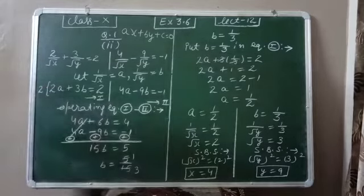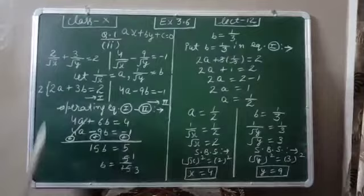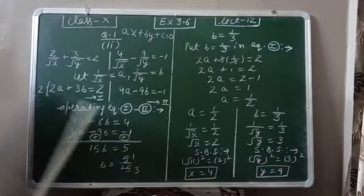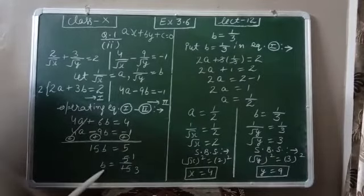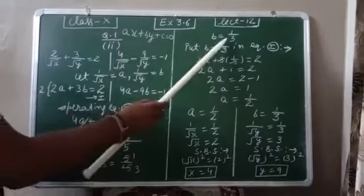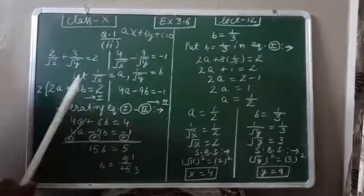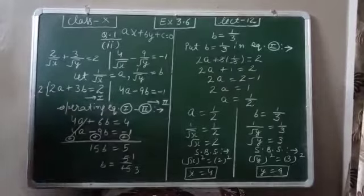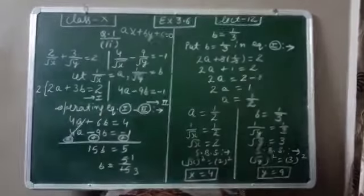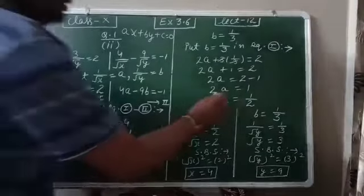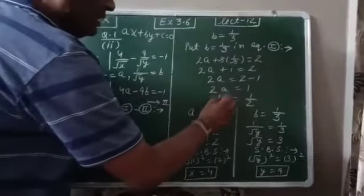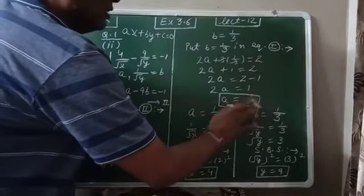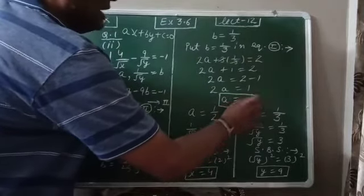Now we can apply the elimination method. We multiply the first equation by 2 and then solve. We get the value of b equal to 1 upon 3. We put the value of b in the first equation, solve, and find out the value of a. After finding the values of a and b, we have to find out the values of x and y.